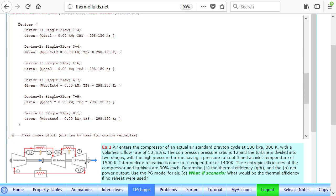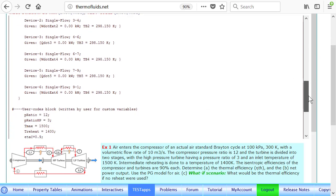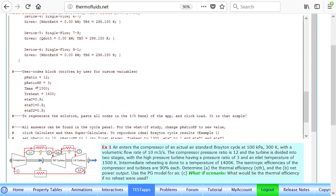It's a fairly complicated problem, but you'll also notice that there are some overall parameters defined as user variables, like pressure ratio is 12, pressure ratio of the high-pressure turbine by 3, maximum temperature, etc. That makes it very easy to do parametric study.